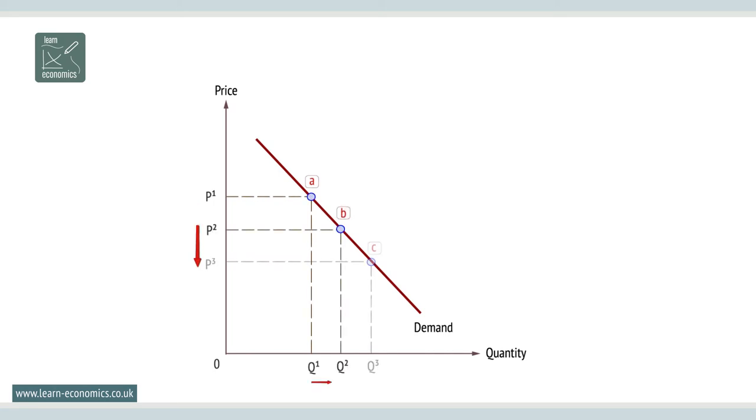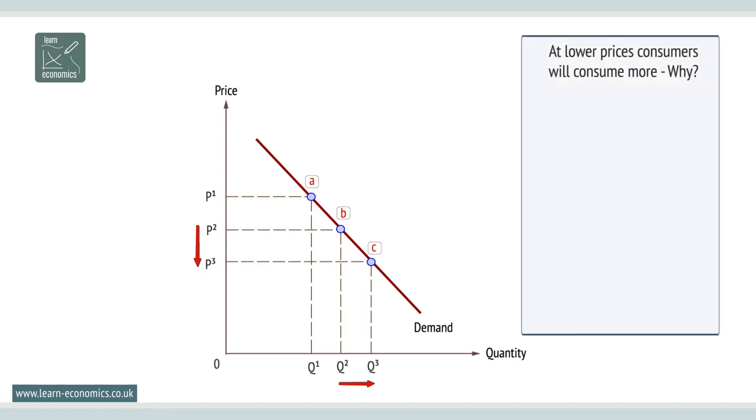Demand curves slope down from left to right. Price and quantity demanded are usually inversely related. At lower prices, consumers will consume more. Why is this? There are several answers.